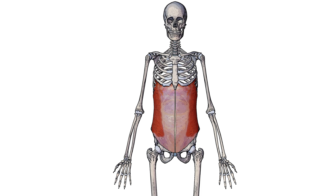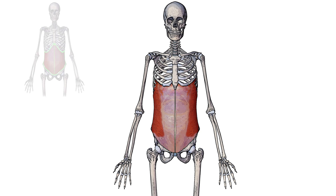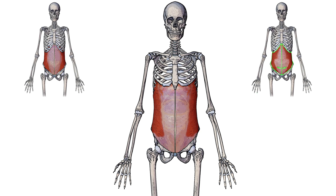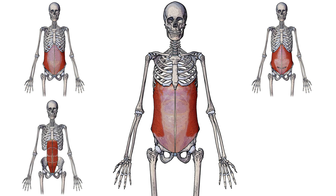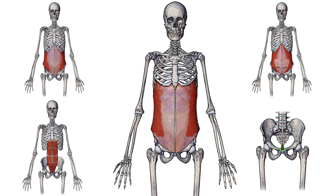There are three muscles which form the rectus sheath: the external oblique, the internal oblique, and the transversus abdominis. And if we add another two muscles onto that list — the rectus abdominis and the pyramidalis — then we now have all five main abdominal muscles shown here.